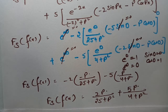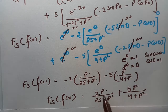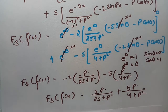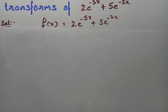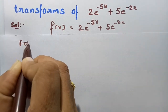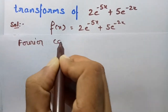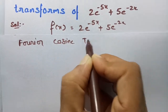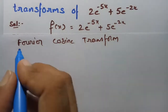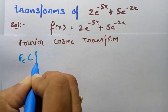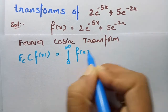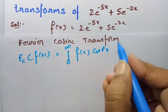Therefore the Fourier sine transform of f of x is 2p divided by 25 plus p squared plus 5p divided by 4 plus p squared. Next, we have to calculate the Fourier cosine transform. We have the same f of x and we need to find the Fourier cosine transform. The Fourier cosine transform of f of x equals integral 0 to infinity of f of x into cos px into dx.